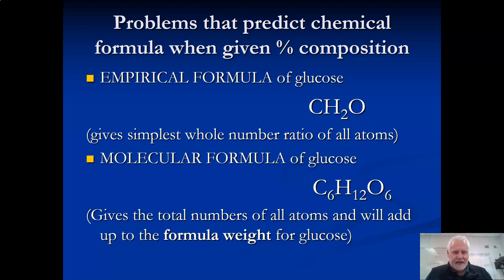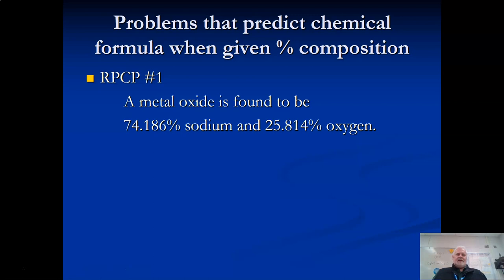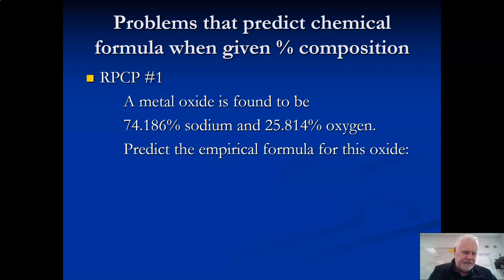Make sure you got those definitions down. Hit pause if you need to. We're going to call this RPCP number one. It's just a nickname I have for it - Reverse Percent Composition Problem. A metal oxide is found to be 74.186% sodium and 25.814% oxygen. Given those percents, we're asked to predict the empirical formula for this oxide.